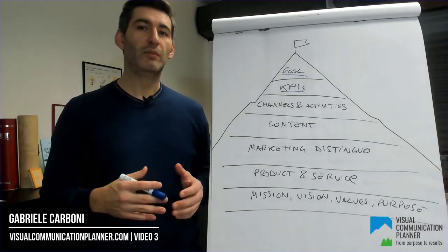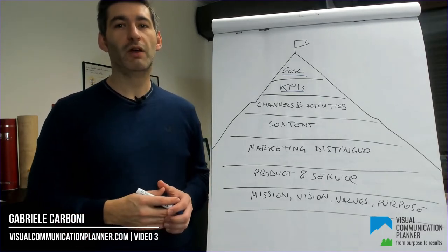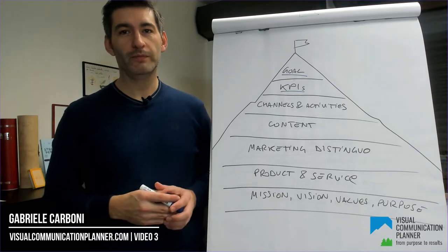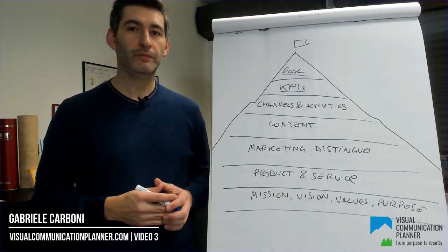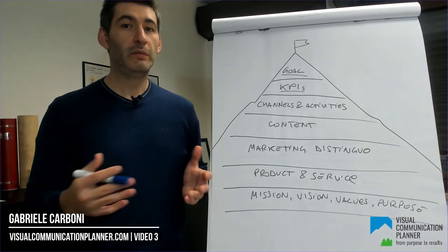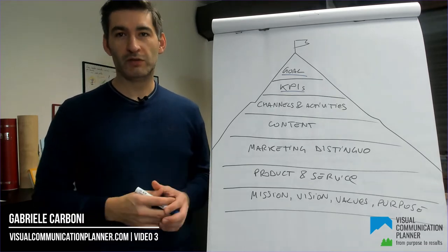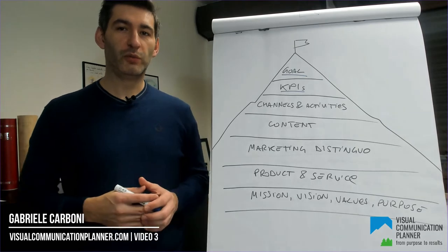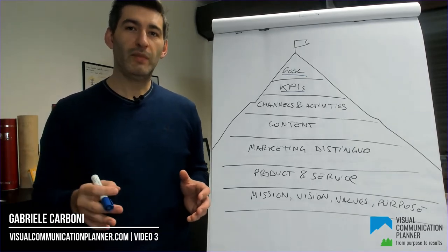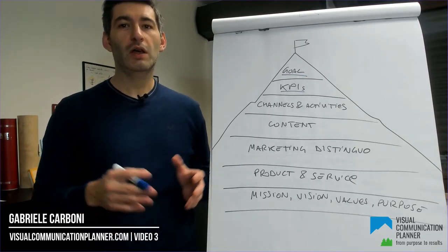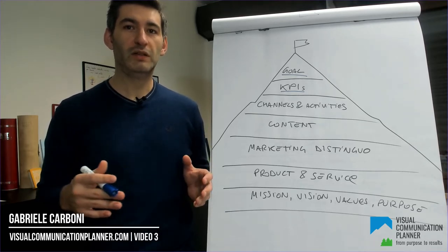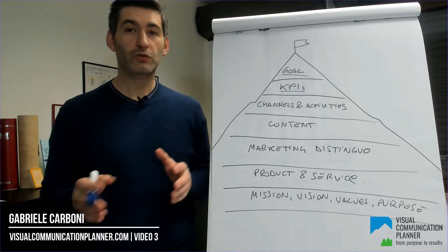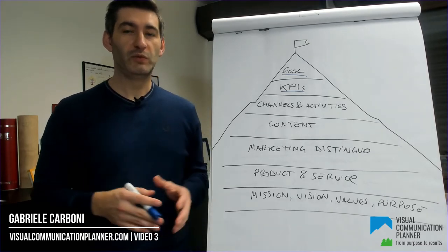For example, acquiring more followers on Instagram is for sure not a goal. It could be a KPI if you are an influencer. In reality, it's a metric — a fancy-sounding metric, or a vanity metric if you prefer. It is just a number with no meaning if you don't combine it with two more dimensions. A KPI should always be determined by a metric, a source channel, and a time span.